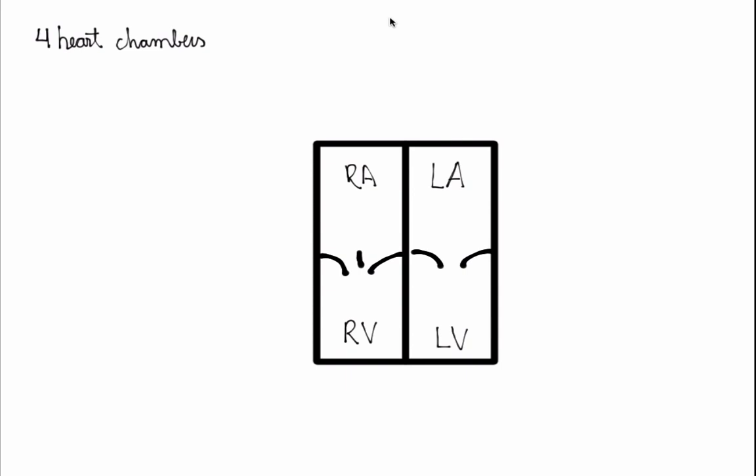The difference between these two sets of chambers — the atria and the ventricles — is that the atria receive blood and the ventricles pump blood away from the heart.